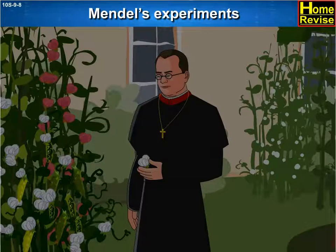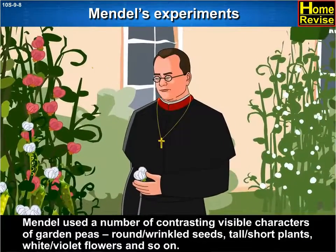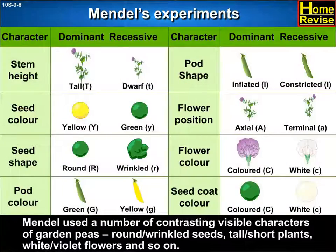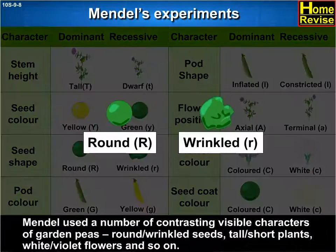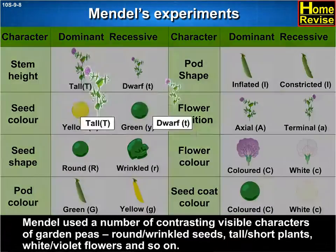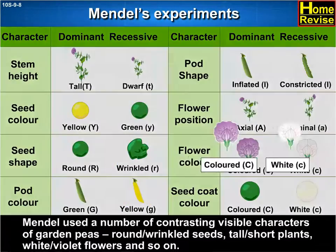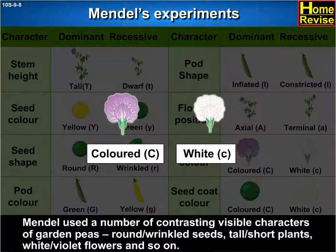Mendel's Experiments. Mendel used a number of contrasting visible characters of garden peas: round or wrinkled seeds, tall or short plants, white or violet flowers, and so on.